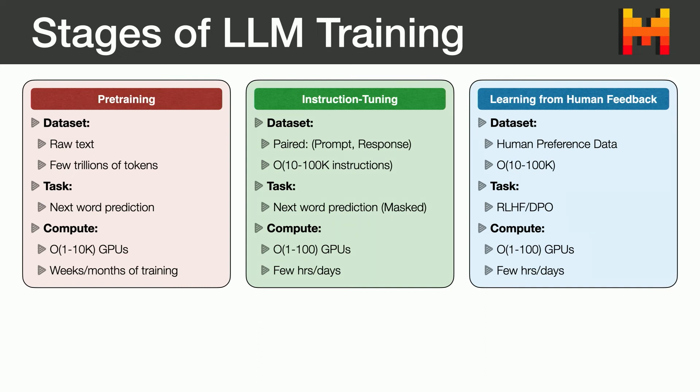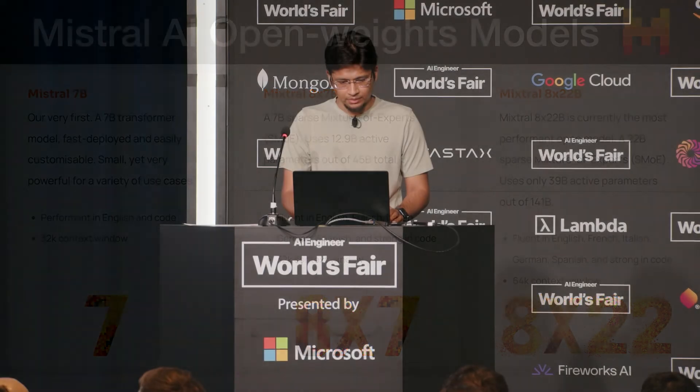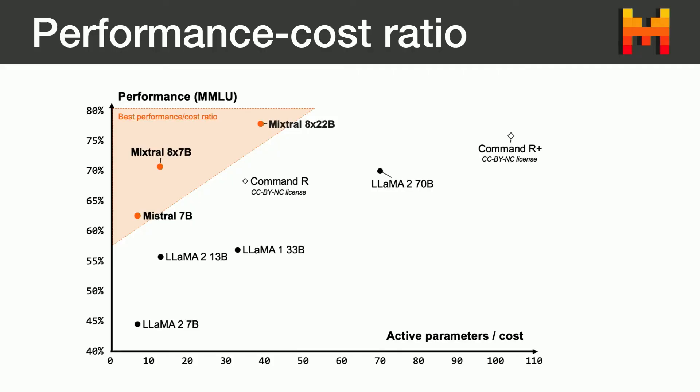To summarize, these are the three stages — they have different orders of dataset and compute requirements. All the open source models we have have been trained using these techniques. I won't go into the details of the model architecture itself, but I'll show you this graph of performance-to-cost ratio, which shows that we really try to optimize this metric and get the best performance out of our models at a particular size. On the X axis we have the active parameters, which is directly proportional to the cost of running the model. On the Y axis we have a popular benchmark, MMLU. We try to be in the top left corner to get more performance with lower cost.